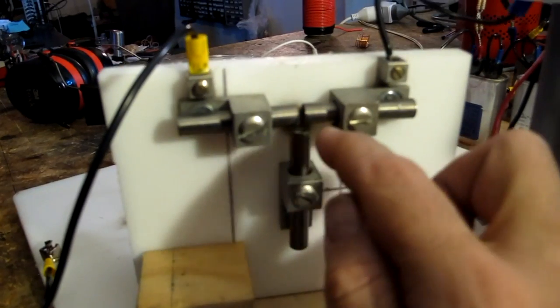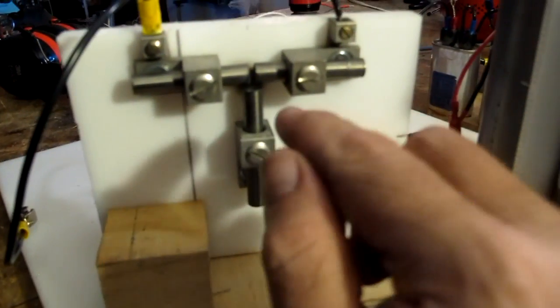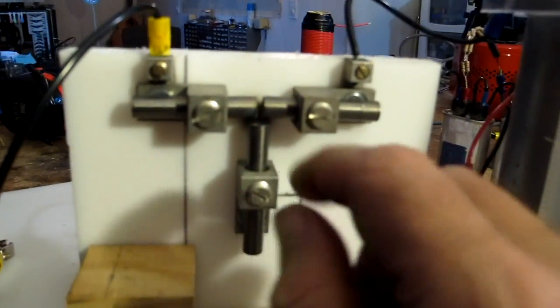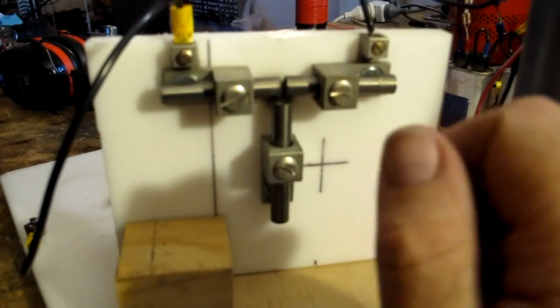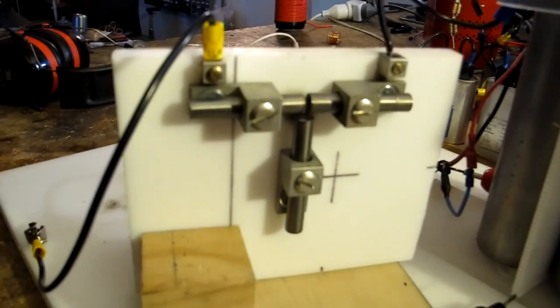It does require quite a bit of fine tuning because you need to get it to the point where it doesn't spontaneously arc across, because then it'll just go off when you get to a certain voltage. But also isn't so large a gap, which I found that this is at the moment, that it leaves a lot of voltage in the caps because the arc breaks down before all of the power has managed to go through.